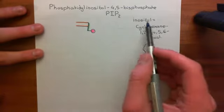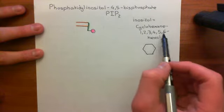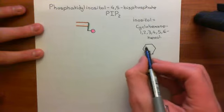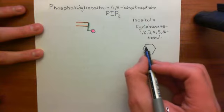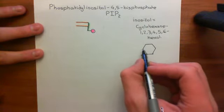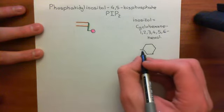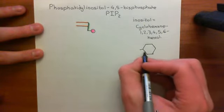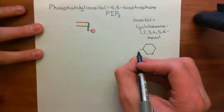We've discussed that the proper name for inositol is cyclohexane 1,2,3,4,5,6-hexol, which is a six-carbon ring where all of the bonds between consecutive carbons are single bonds, and you're going to have an alcohol group coming off every single one of the carbons.